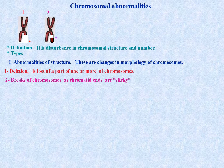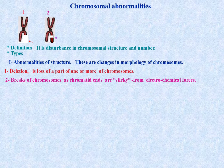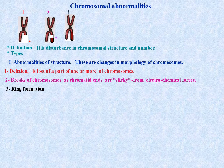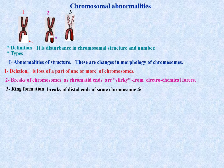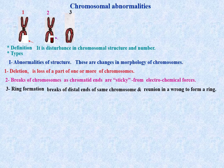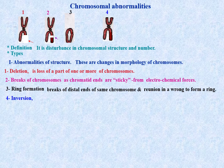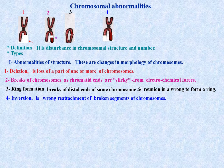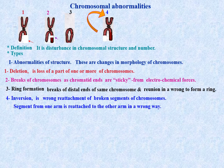Most breaks heal rapidly and correctly. Ring formation results from breaks at the distal ends of the same chromosome and their reunion in the wrong way to form a ring. Inversion is the wrong reattachment of broken segments of chromosomes, where a segment from one arm is reattached to the other arm incorrectly.